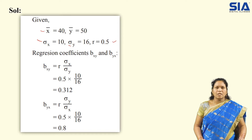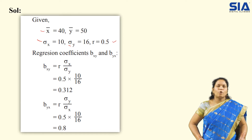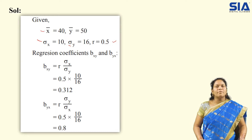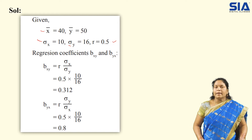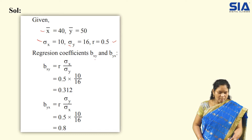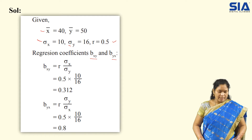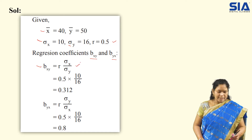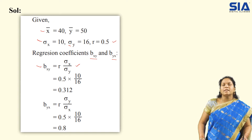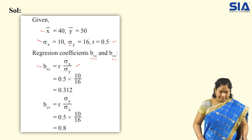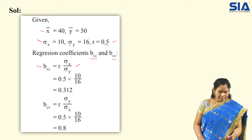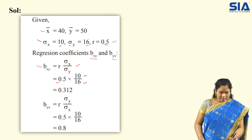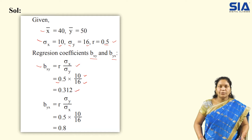Let us first obtain the regression coefficients. Using those, let us find out the regression equation x on y and y on x. Then finally we obtain the missing value. First, I am finding the regression coefficients. The formula for regression coefficient bxy is r × (σx / σy). r = 0.5, σx = 10, σy = 16. Substituting: bxy = 0.5 × (10/16) = 0.312.